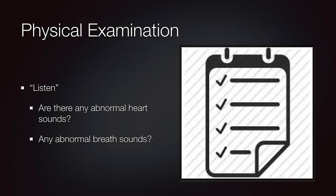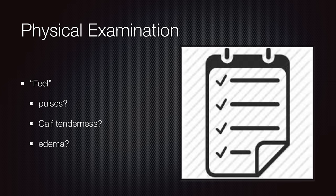You also want to make sure you listen to the patient. Are they having any abnormal heart sounds or abnormal breath sounds? The physical examination coinciding with the history will give you a big picture of what's going on with the patient. You also want to feel and see if the patient has pulses — if they don't have pulses, it might indicate an aortic dissection. Do they have calf tenderness? Patients who have deep venous thromboses can lead to a pulmonary embolism. Do they have edema in their legs?